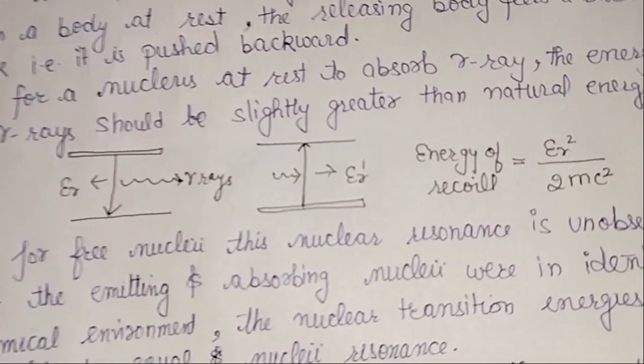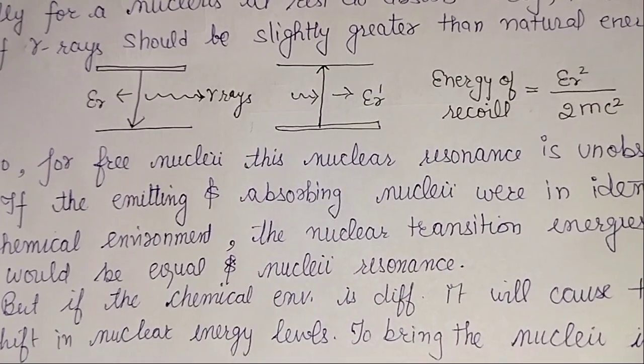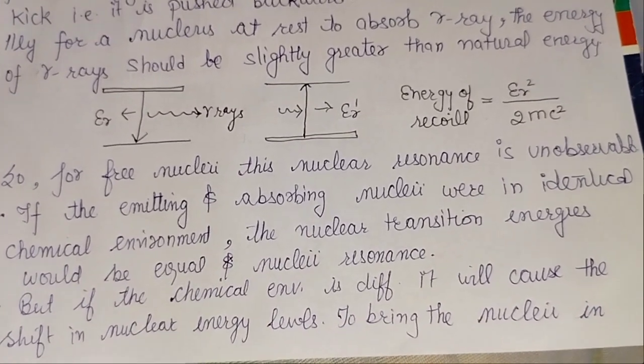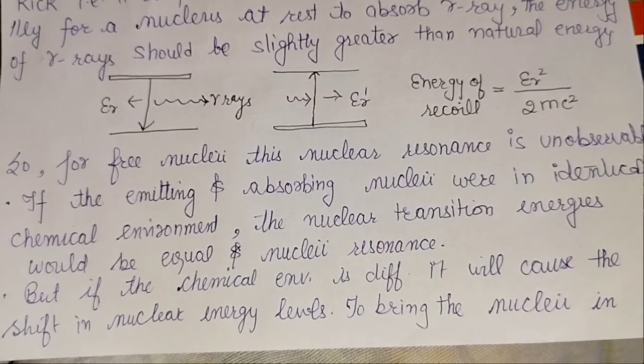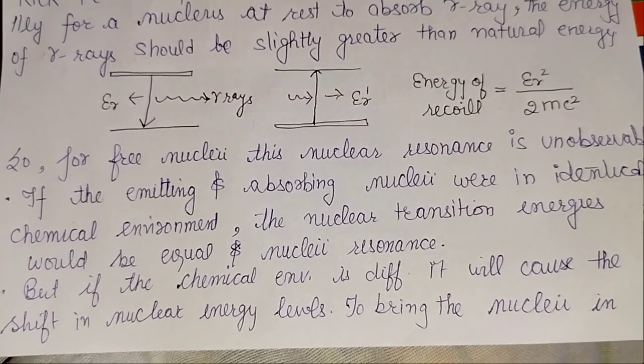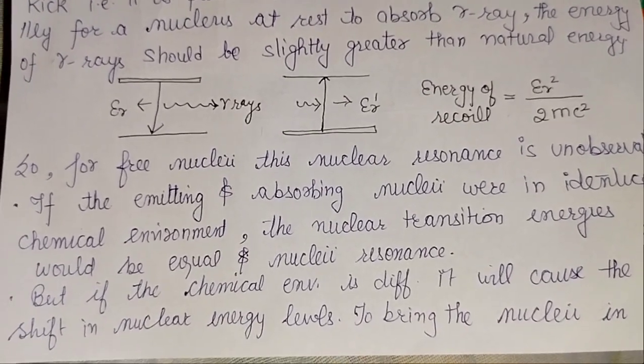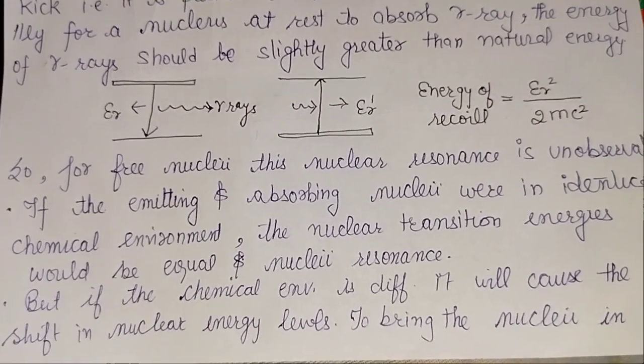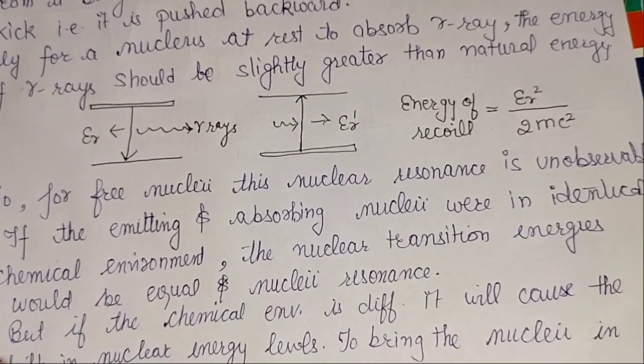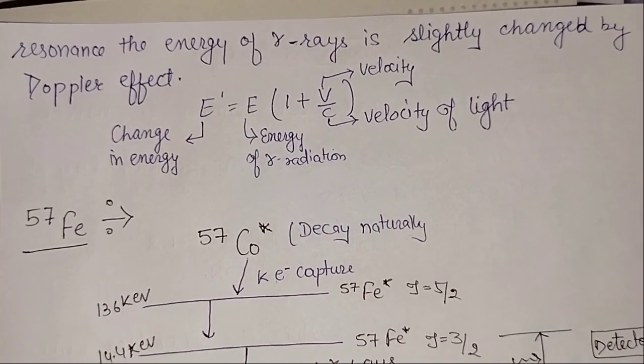The energy of recoil is given by E squared over 2mc squared. Now, if it is free nuclei, the nuclear resonance will be unabsorbed. If the emitting and absorbing nuclei were in identical chemical environment, then the nuclear transition is equal. But if the chemical environments are different, this will cause a shift in nuclear energy levels so that the nuclear energy equals the energy of gamma rays.